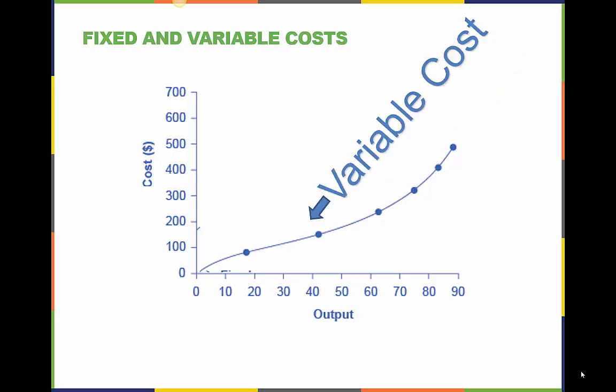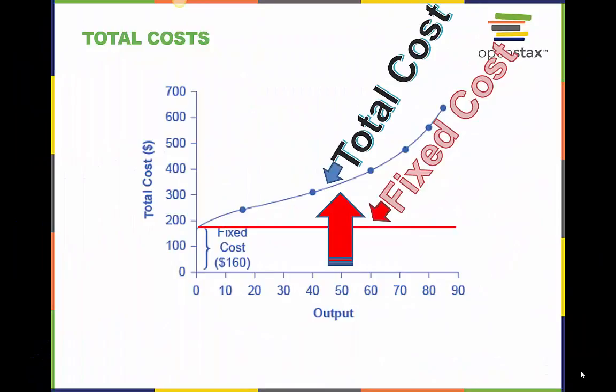This line represents the variable cost, which increases as production increases. This might include hourly labor and utility costs.